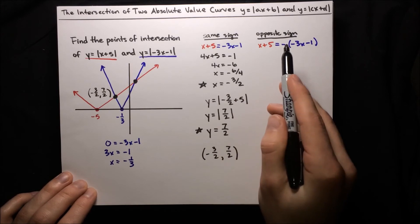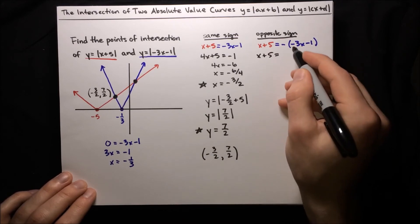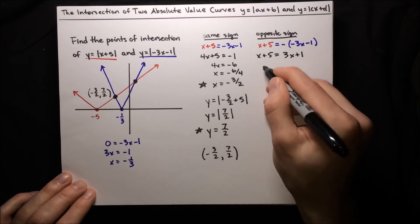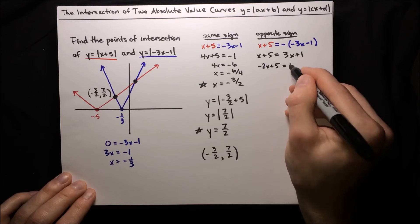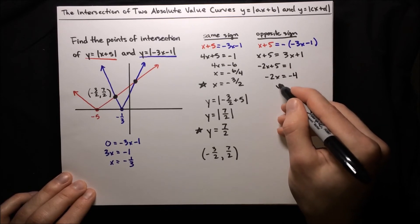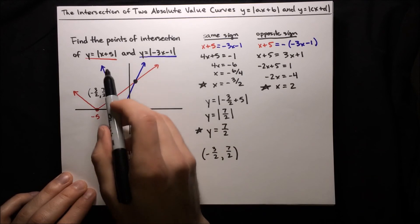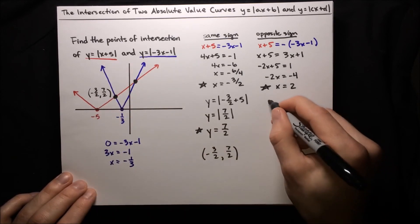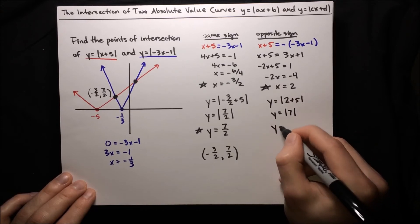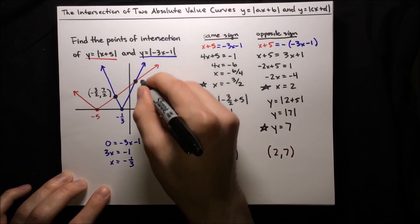Now we have to solve for the other point of intersection using the opposite-sign equation: x plus 5 equals negative of negative 3x minus 1. Distributing the negative sign cancels the existing negatives and we just have 3x plus 1. Then subtracting 3x gives negative 2x plus 5 equals 1. Subtracting 5 gives negative 2x equals negative 4, and dividing by negative 2 gives x equals 2. That's part of our next solution — plugging x equals 2 into the first equation: y equals absolute value of 2 plus 5 equals absolute value of 7, so y equals 7. Our other point of intersection is 2 comma 7.